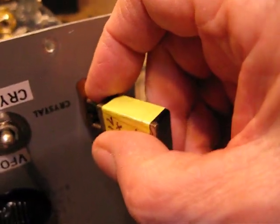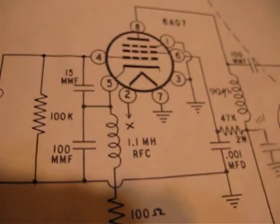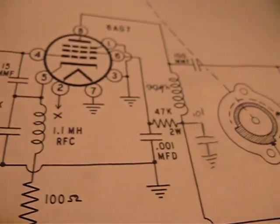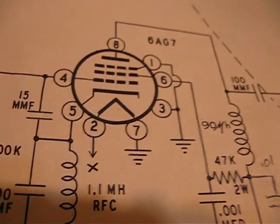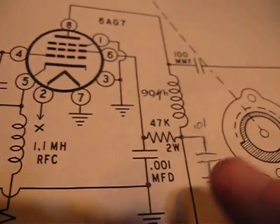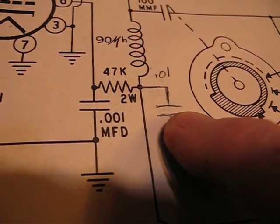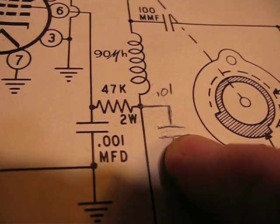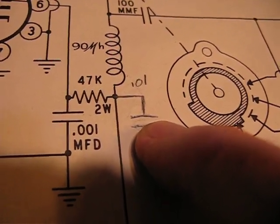I got out the AT1 schematic, an original AT1 schematic from when somebody built one back in the 1950s. Here is the 6AG7 oscillator tube and you'll notice I have penciled in a 0.01 microfarad capacitor right there. I looked at the schematic and I thought, I don't see any bypass there. I traced the wiring all the way through and I did not find a bypass anywhere.